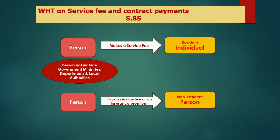Now moving to Section 85. There is a clear difference between Section 85 and Section 84A because Section 85 applies when a person makes a payment to a resident individual — not a person to a person, but a person making a service payment to a resident individual. As a government department, ministry, or local authority, you are not a person, therefore you need not deduct withholding tax under Section 85 either.